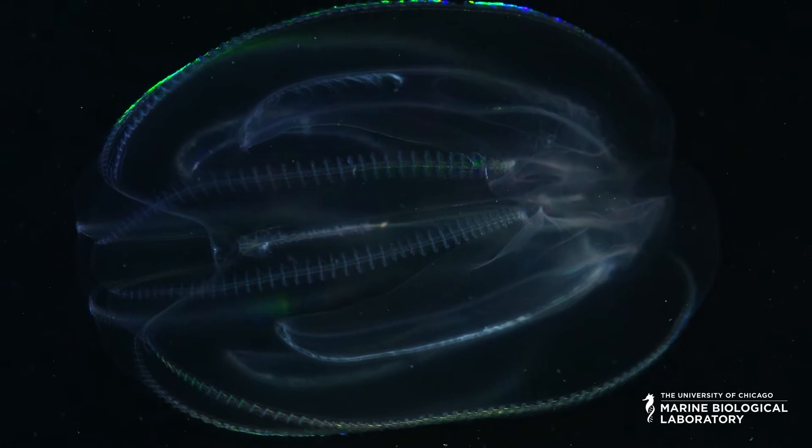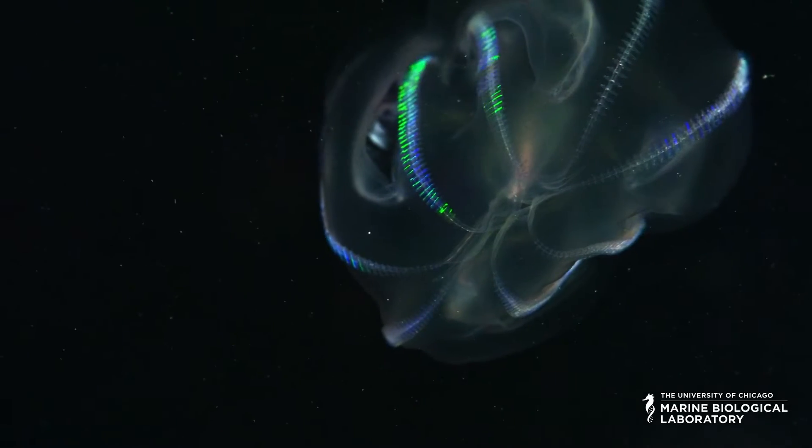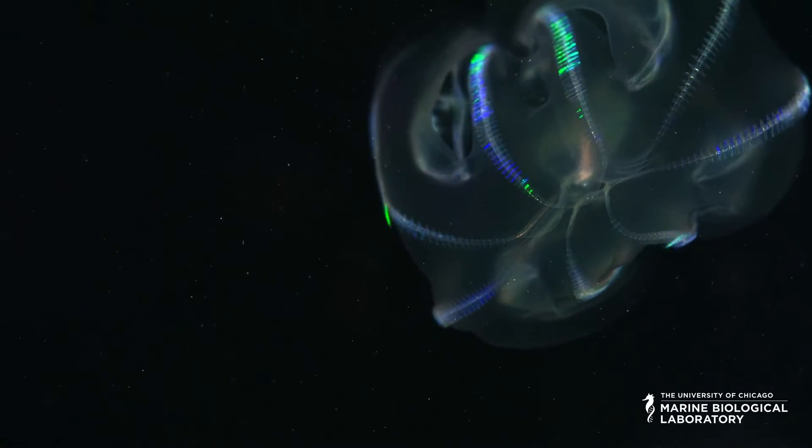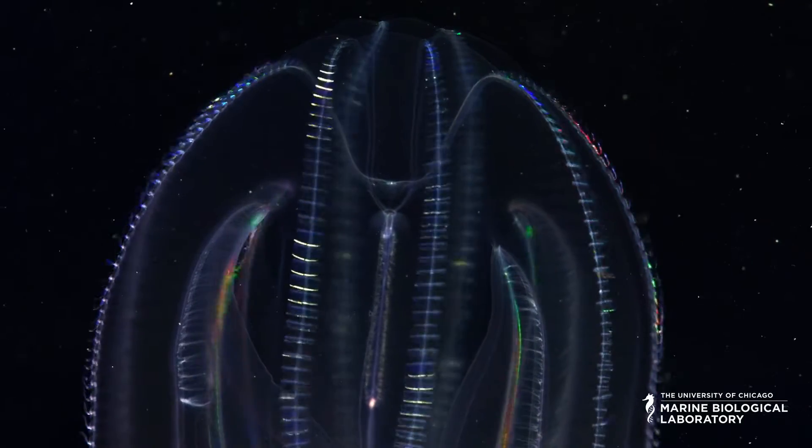Teenophores are gelatinous animals found in all oceans including the waters around Woods Hole, Massachusetts. They get their name from the teen rows along their body.